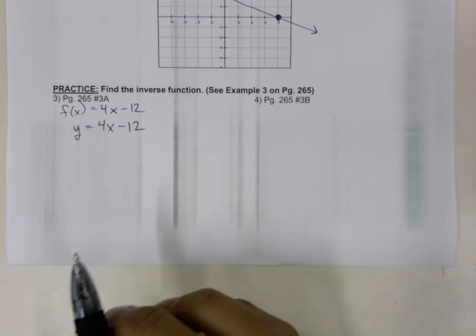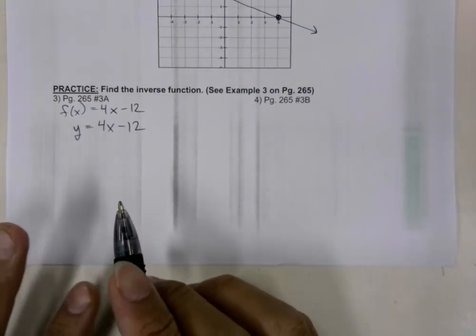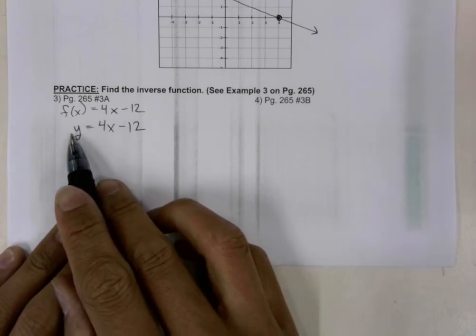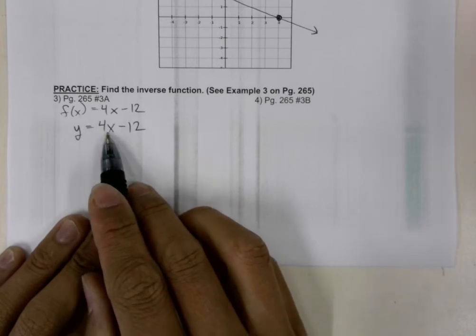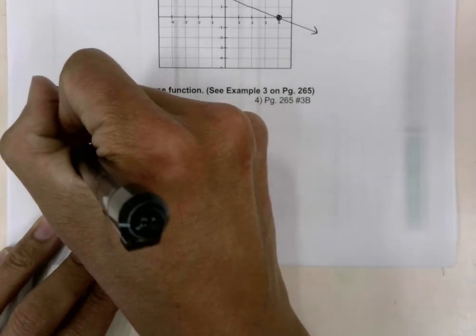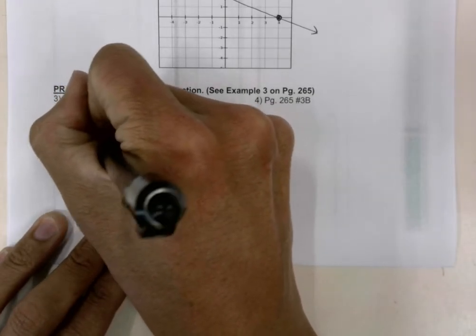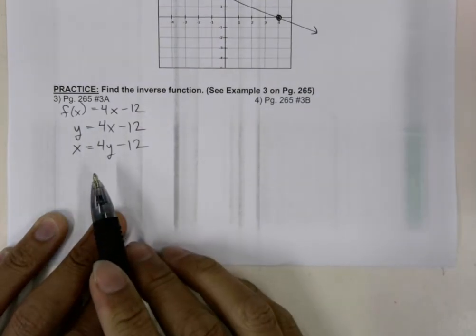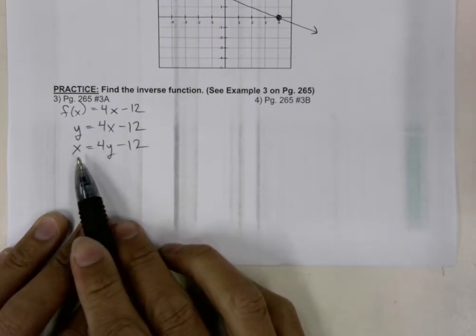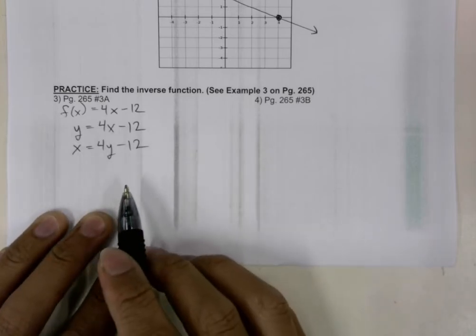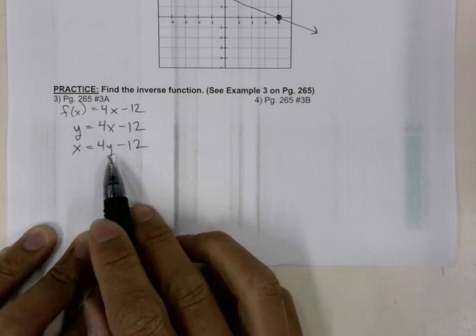Now, what we're going to do is we are going to replace the y with x and replace the x with y. Now that we've replaced the x with y and the y with x, what we need to do is solve for y.